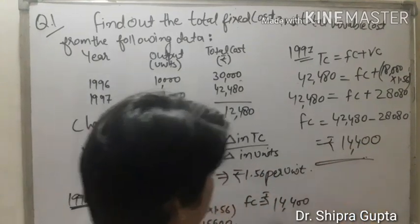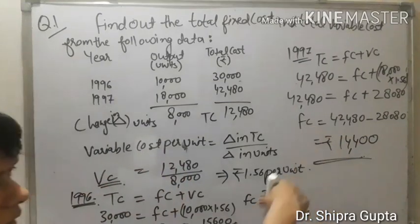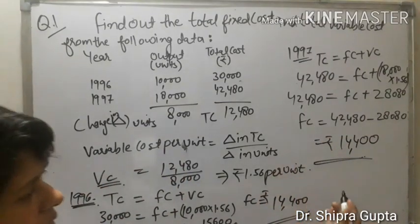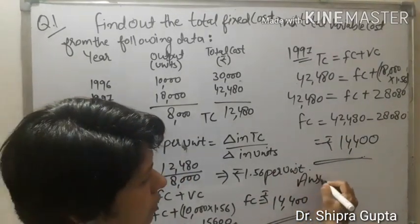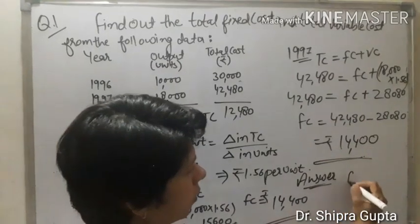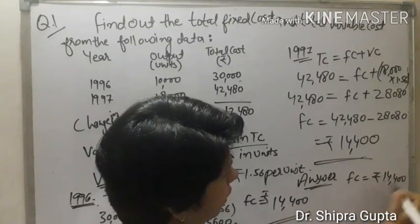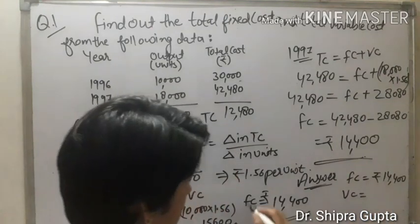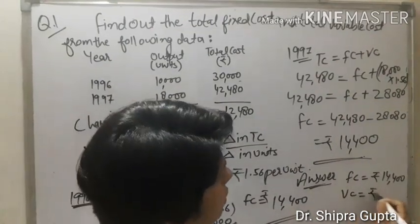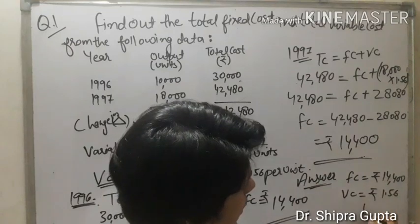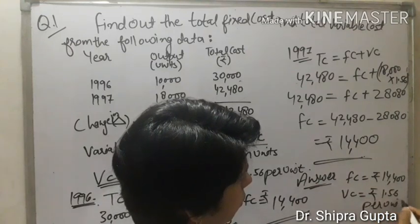Now we can see in both conditions, our fixed cost remains the same. So the answer is fixed cost is 14,400 rupees and variable cost is rupees 1.56 per unit.